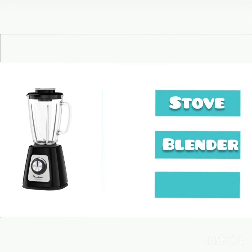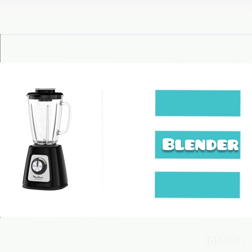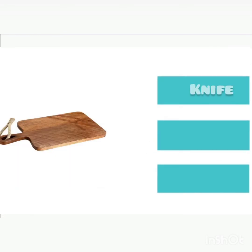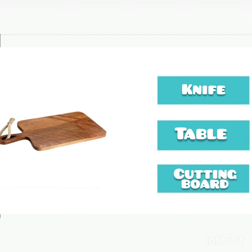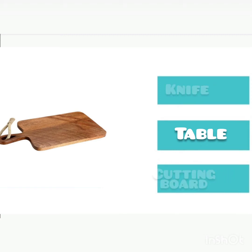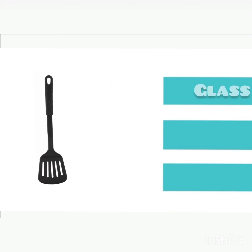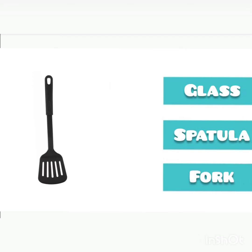Stove. Blender. Fridge. Now — blender. The second picture. Knife. Table. Cutting board. Montez. Cutting board. Glass. Spatula. Fork. Very good. Spatula.